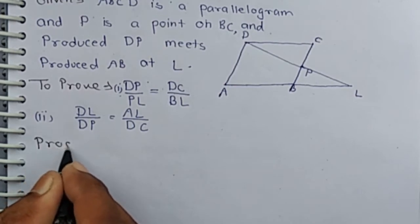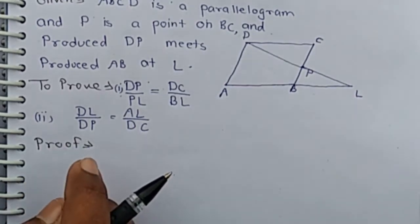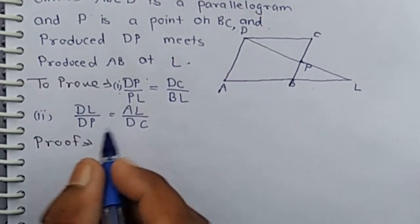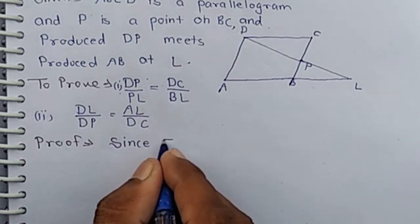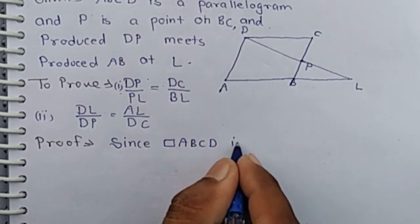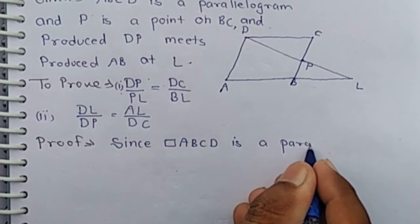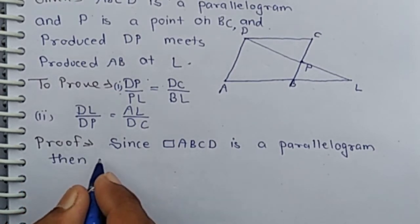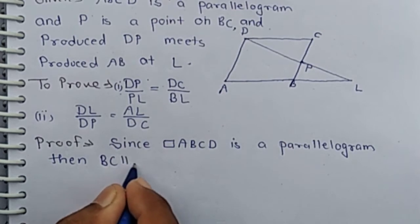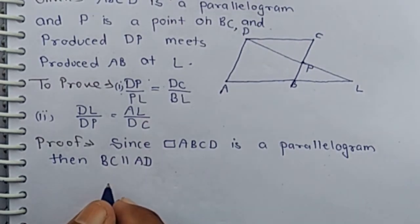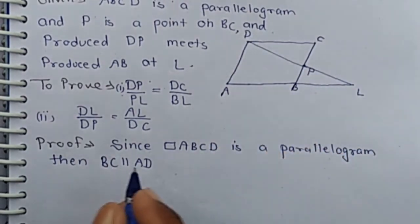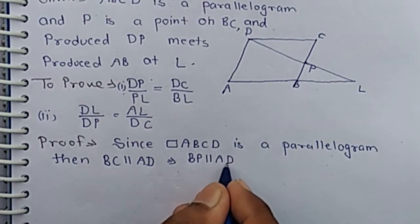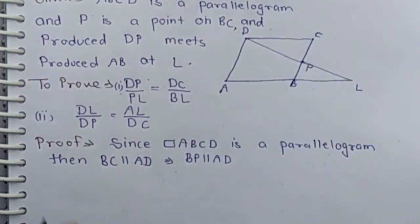Proof: Since ABCD is a parallelogram, its opposite sides are parallel. Therefore BC is parallel to AD. Since BC is parallel to AD, BP is also parallel to AD.